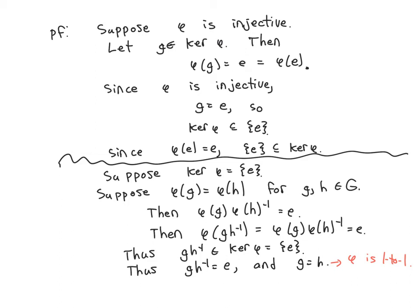Now suppose the kernel is the trivial subgroup, and suppose phi of g equals phi of h for some g and h; we want to prove g equals h. Move phi of h to the other side: phi of g times phi of h inverse equals the identity. By properties of homomorphisms, that's phi of g times h inverse equals the identity. So g times h inverse is in the kernel. Since the kernel is trivial, g times h inverse equals the identity, so g equals h. Thus phi is injective.